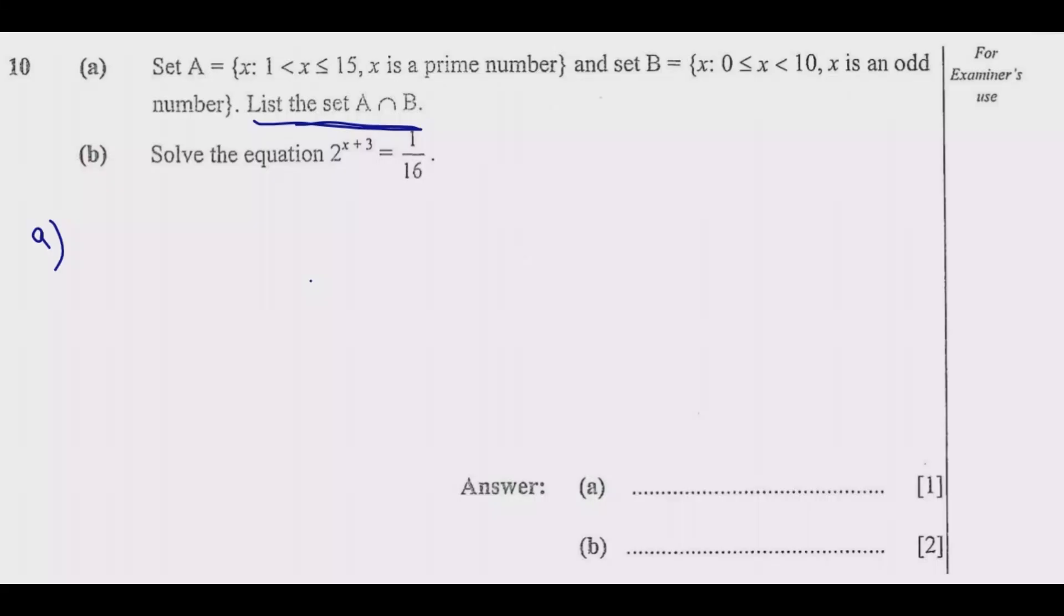These prime numbers should be greater than one but less than or equal to 15. So let us list what is in set A. A should contain the first prime number, which is 2, because 2 can only be divided by 2 itself and 1.